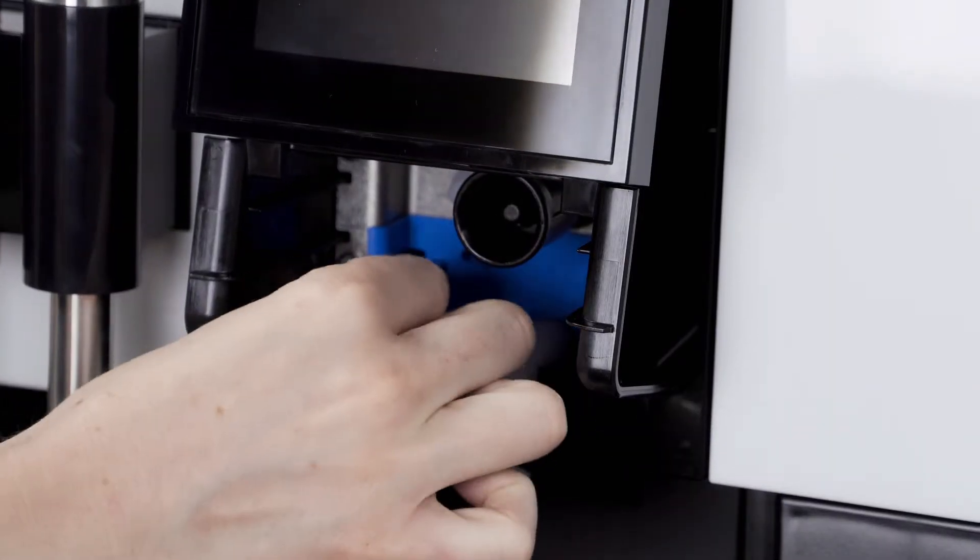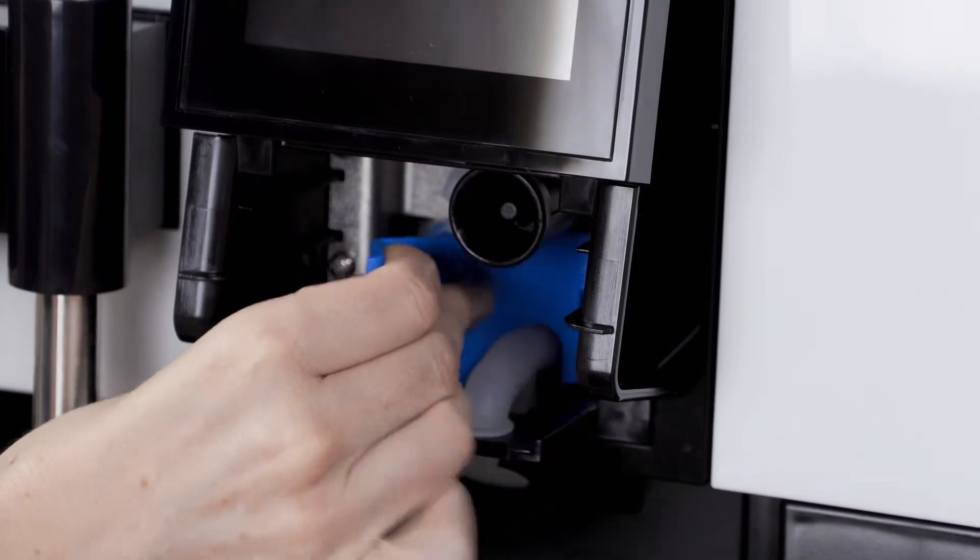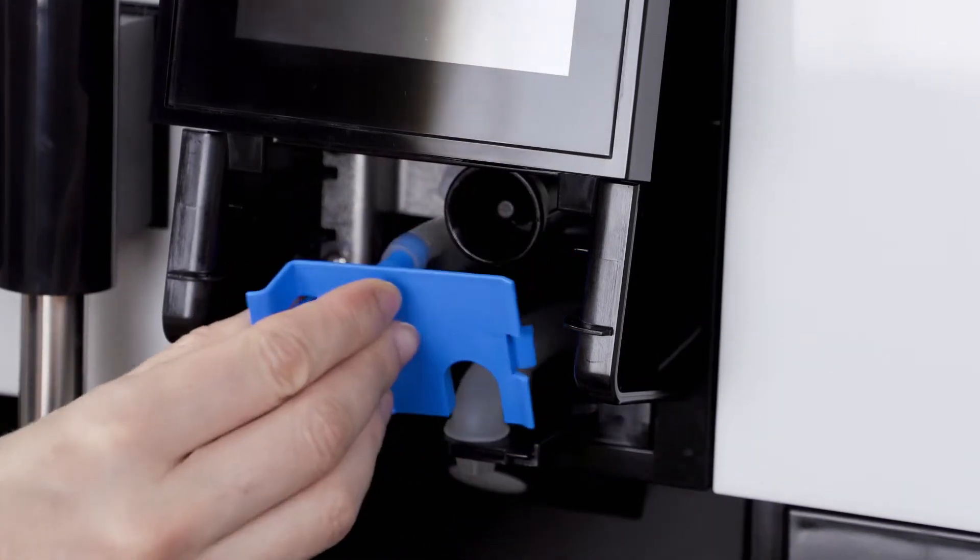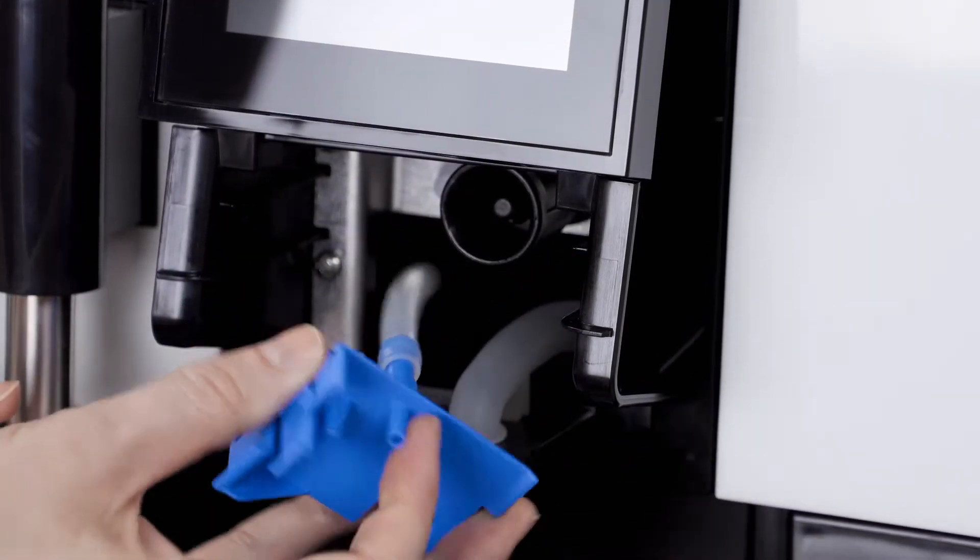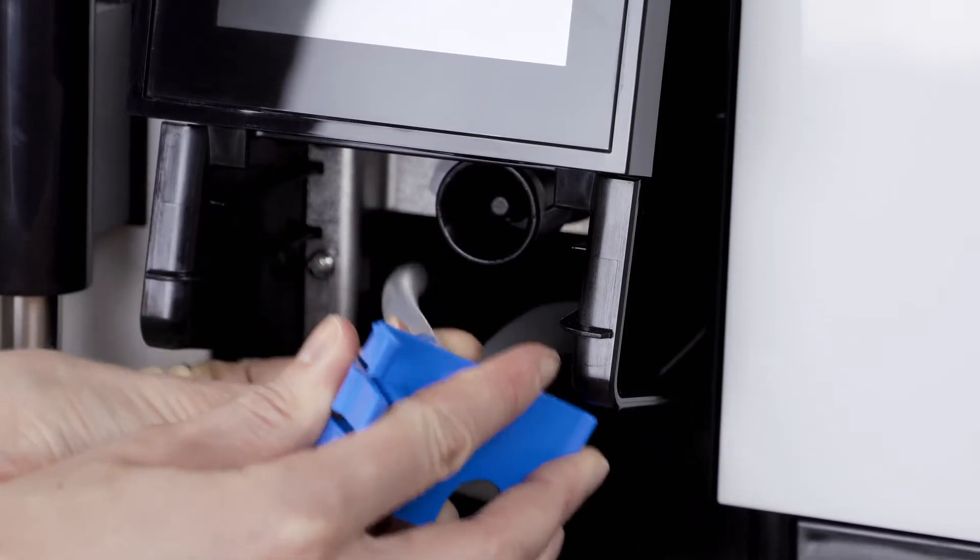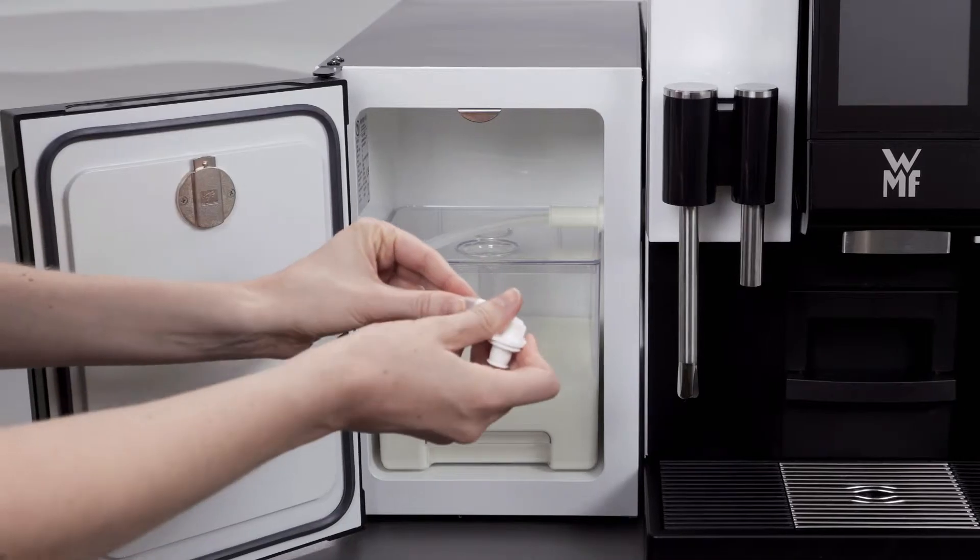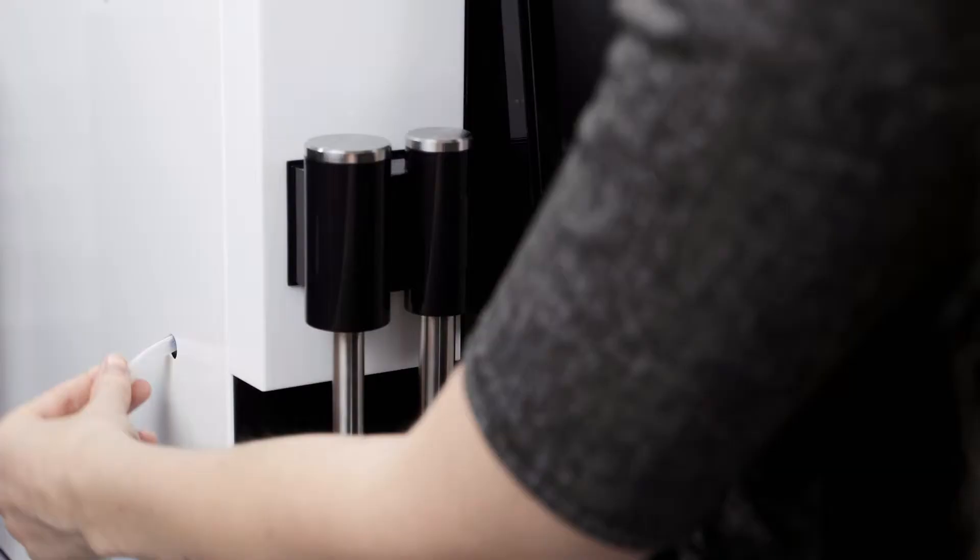Remove the blue aperture and pull carefully outwards until you can access the milk hose attached to it. Remove the milk hose from the aperture. You can now pull the milk hose out of the left hand side of the machine.